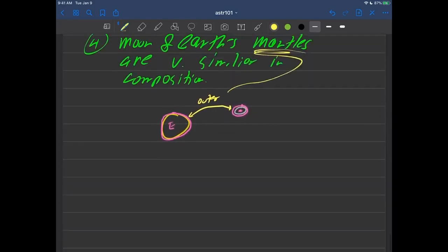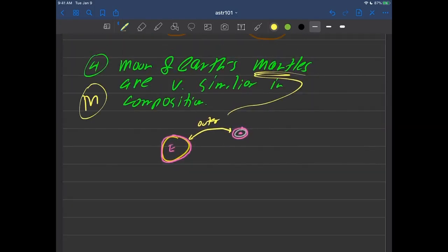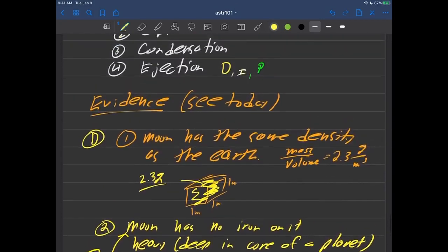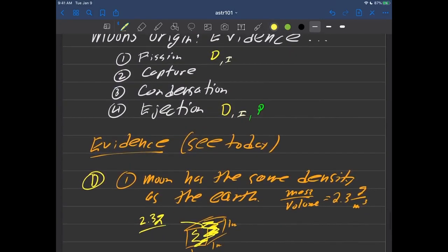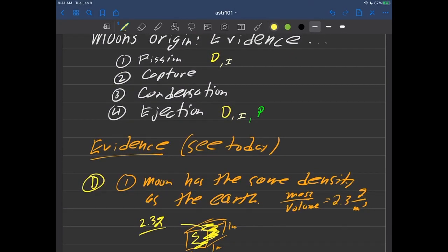And so we'll call this, let's call this the mantle evidence. So go back up to our table here. I'll put an M next to fission I guess because if a part of the earth broke off, certainly the mantle would break off too and maybe that could form part of the moon, but might have gone deeper.